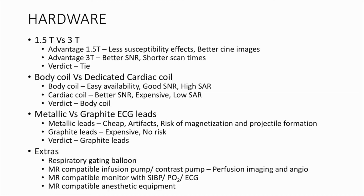Regarding body versus dedicated cardiac coils: the body coil is easily available and has good signal-to-noise ratio, but results in a high specific absorption rate due to RF energy deposition. The cardiac coil has better SNR and a low SAR; however, they are prohibitively expensive. So though theoretically a dedicated cardiac coil is desirable, a body coil will do most of the job at an effective cost.